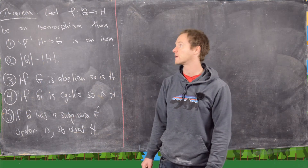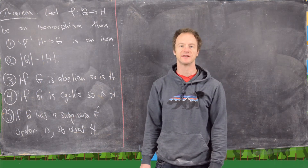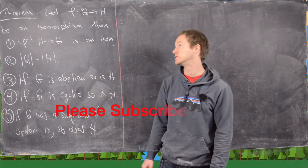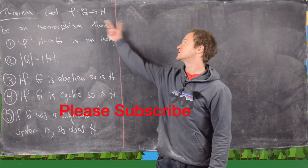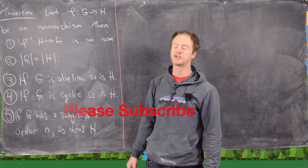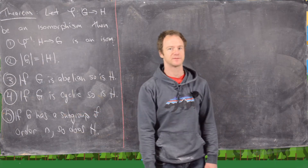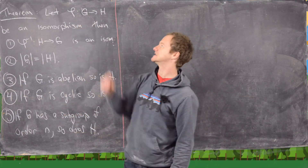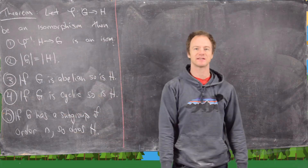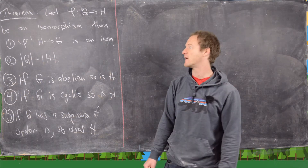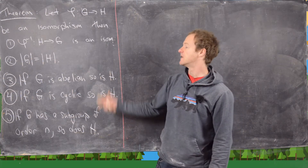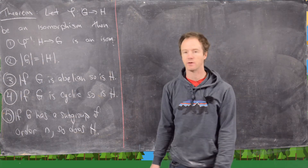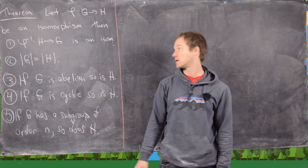Here we're going to look at the following theorem dealing with an isomorphism of two groups. So let's say we've got two isomorphic groups G and H exhibited by this isomorphism phi. Then we have the following five results.